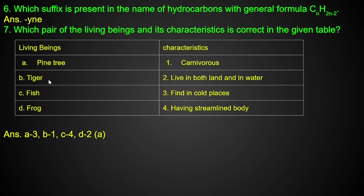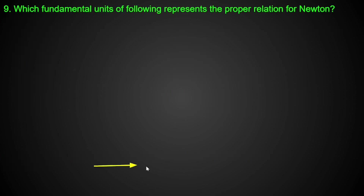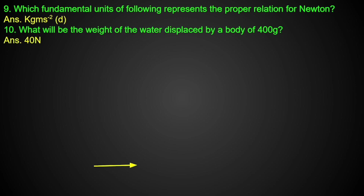Pine tree, tiger, carnivorous fish, streamline, and frog — frog lives in both land and water. What is the weight of a body having mass 50 kg on the moon? It is 50 into 1.67, which equals 83.5 Newton. Which fundamental unit represents the proper relation of Newton? kg·m/s² is the answer — option D.